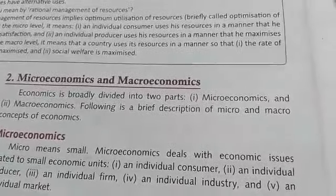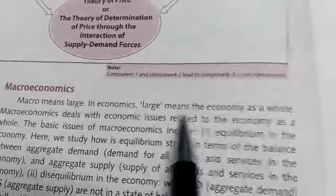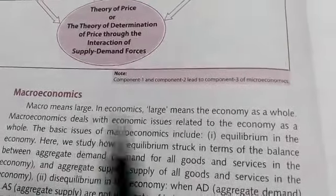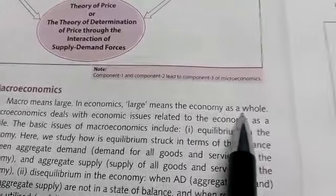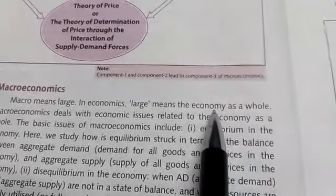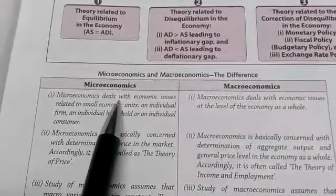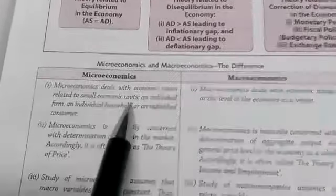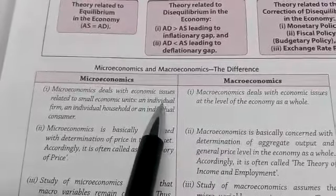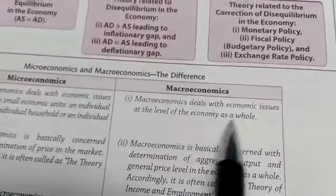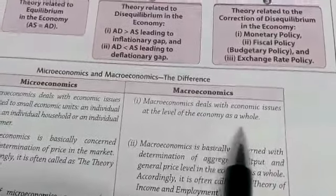So when we study all the economic issues at the micro level — at the individual level — this is microeconomics. On the contrary, when we study economics as a whole, economics which deals with the economy as a whole, that becomes macroeconomics. Macro means large. Microeconomics deals with individual-level economic units like individual firm, individual household, individual consumer, individual producer. Macroeconomics deals with economic issues at the level of the economy as a whole.